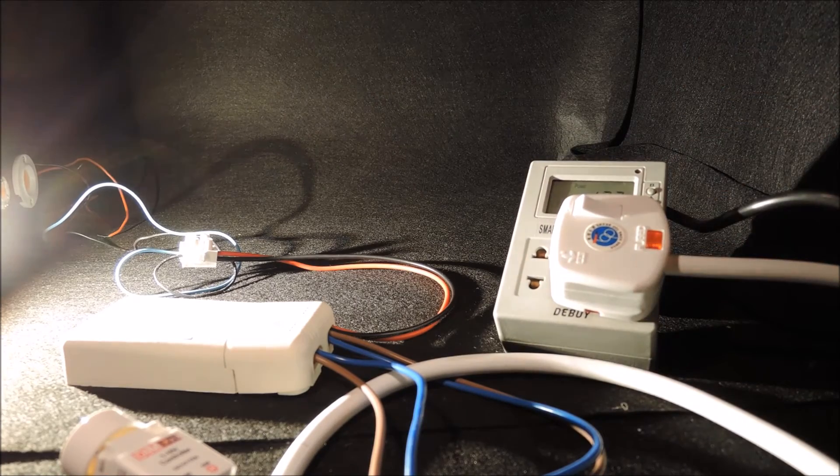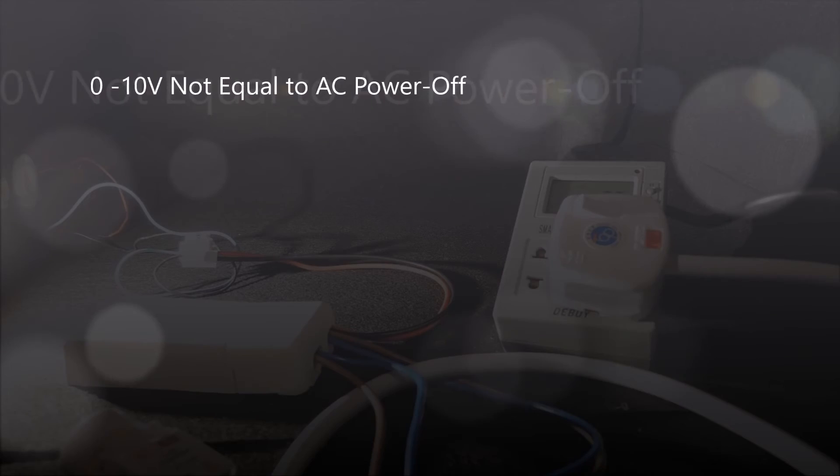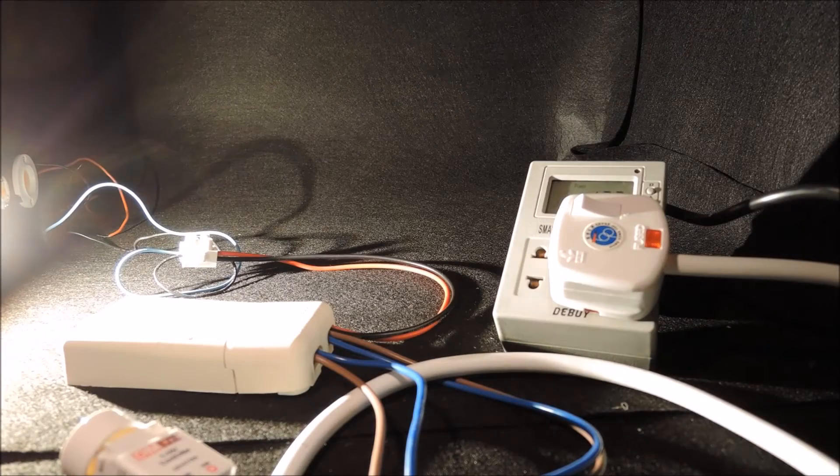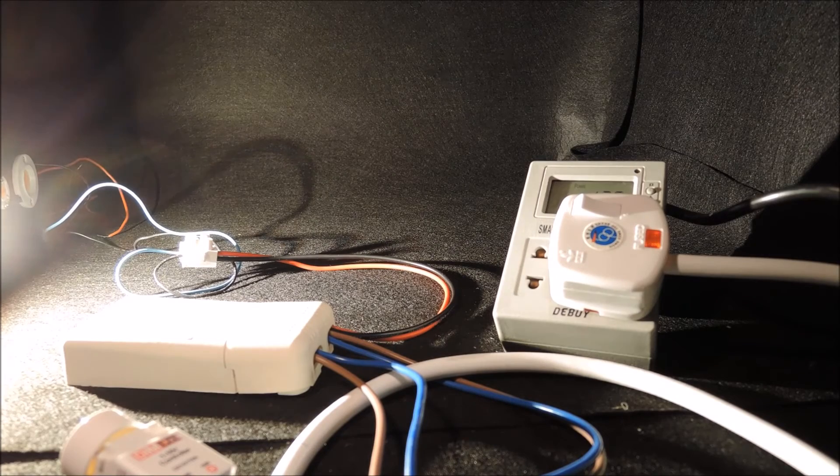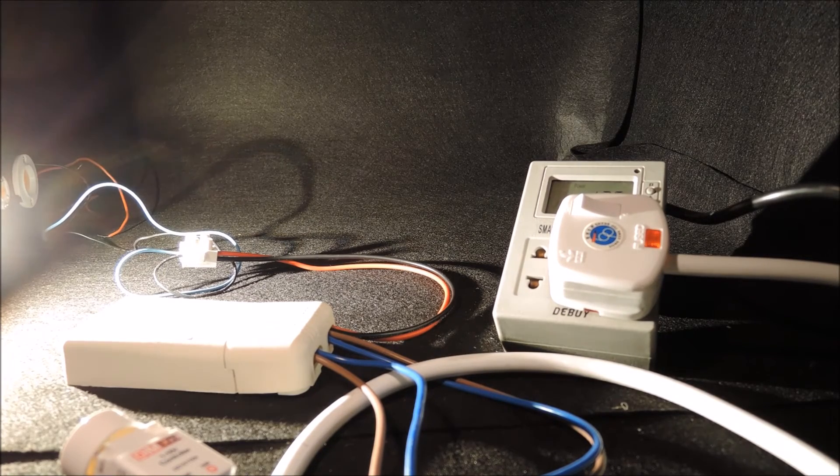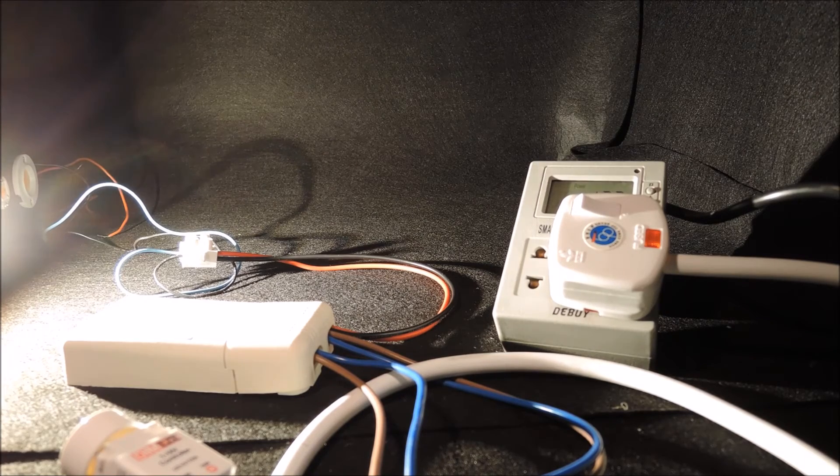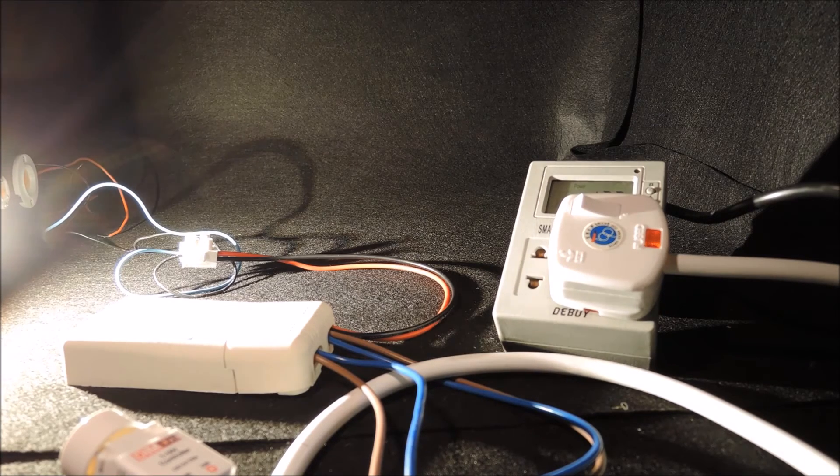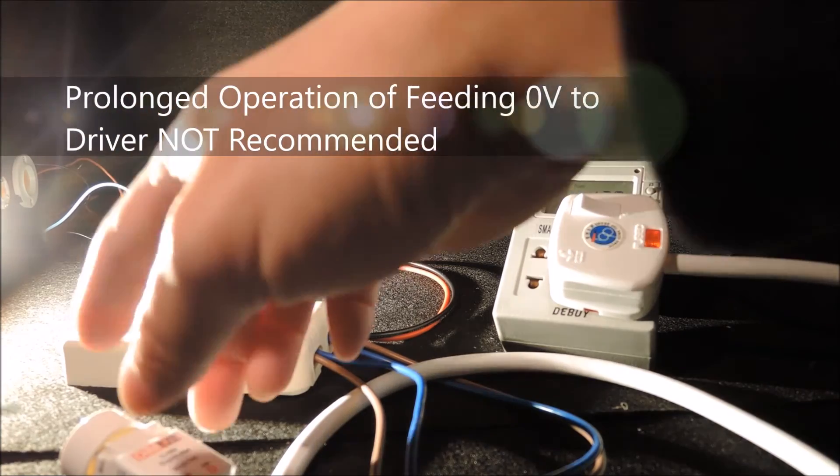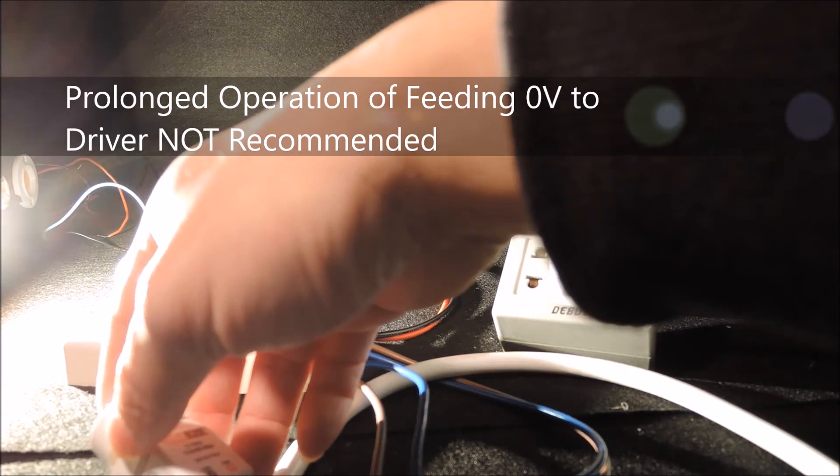This is what we have repeatedly commented on our website that the 0 to 10V dimmer has no equivalent to actually cutting off the AC power to the LED driver. Giving a zero-volt control signal to the driver is essentially the same as shorting the two input terminals, the dim plus and minus, together. In fact, prolonged operation of giving zero volts to the driver can cause driver failure after a period of time.